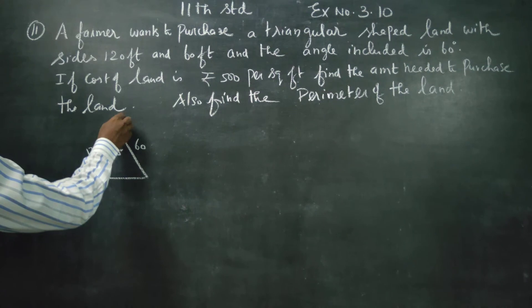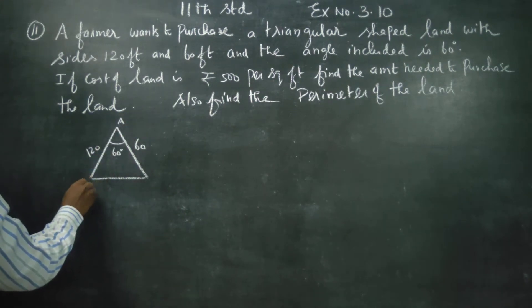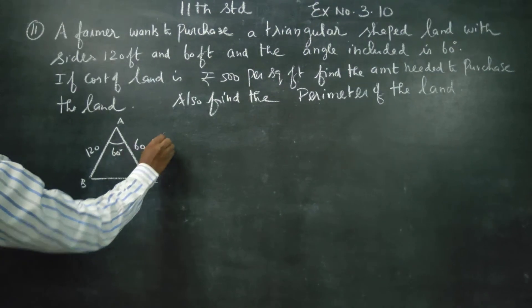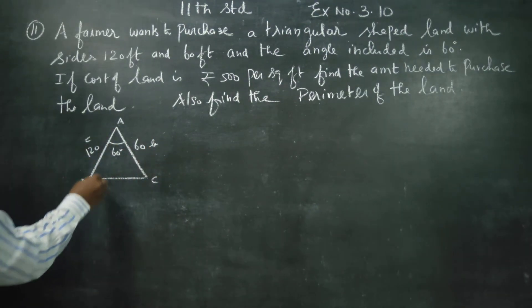First, let it be A, B, C. This is small letter b, this is small letter c.